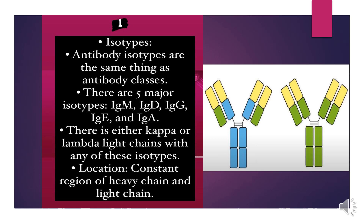The first type of antigenic determinant is known as isotypes. Antibody isotypes are the same thing as antibody classes. There are five major classes: immunoglobulin M, D, G, E, and A. The location of these isotypes is in the constant region of the heavy chain and light chain.